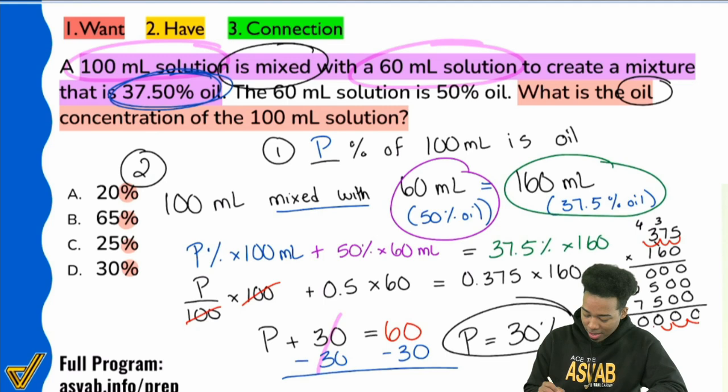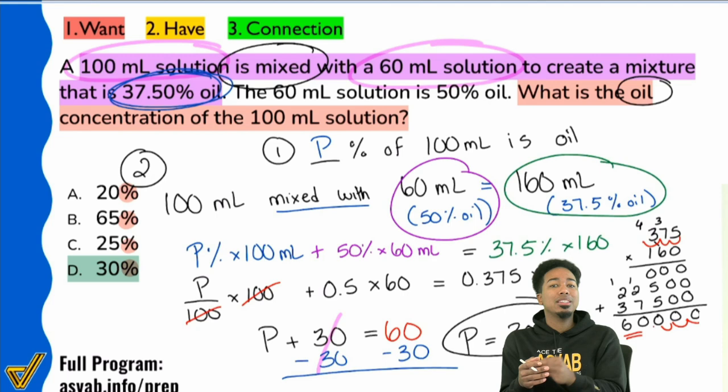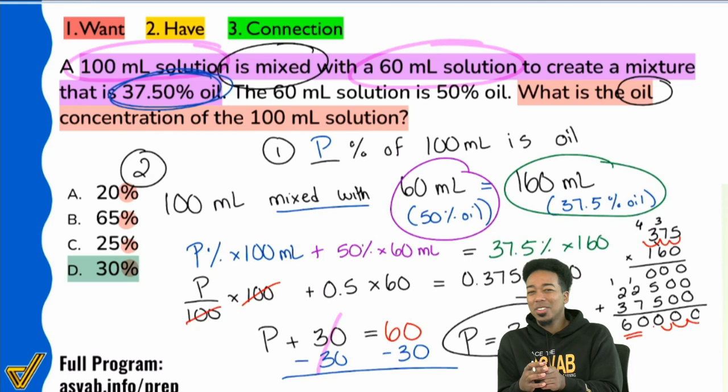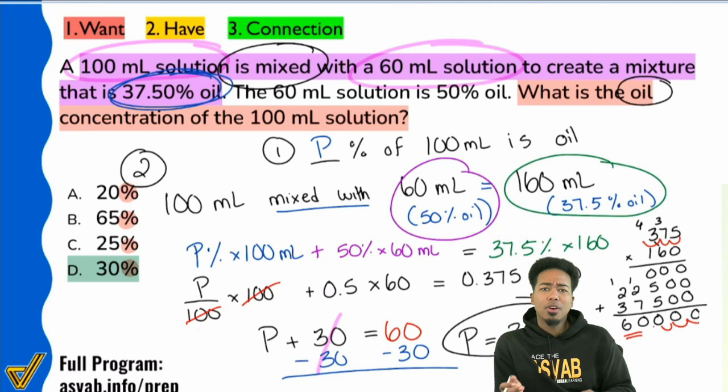If you want to learn more about mixture problems, this is in unit 13 of arithmetic reasoning — advanced word problems. That's also where you'll find problems with rates and more. Without wasting more time, let's go ahead and get into problem number five.